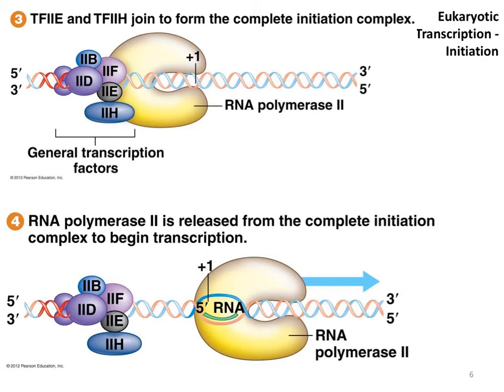Eventually, RNA polymerase will come to the end of the gene. At the end of the gene in eukaryotes, you will find termination sequences, and they will interact with a variety of proteins — that's how termination ends. The termination of eukaryotic transcription is actually pretty complex and a little beyond the scope of this class.